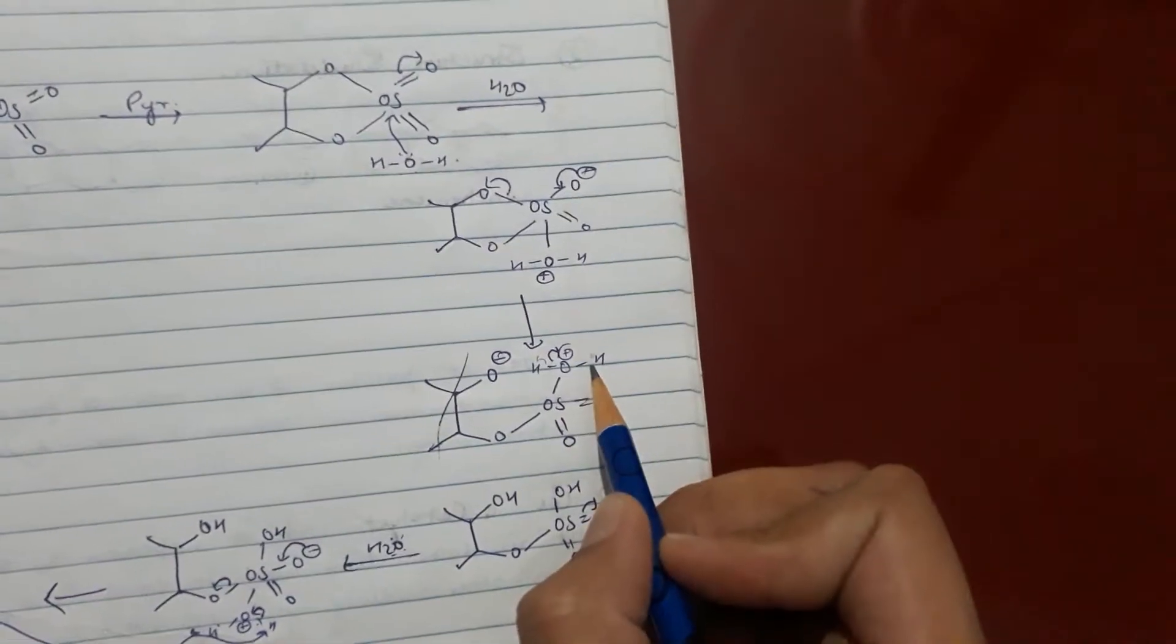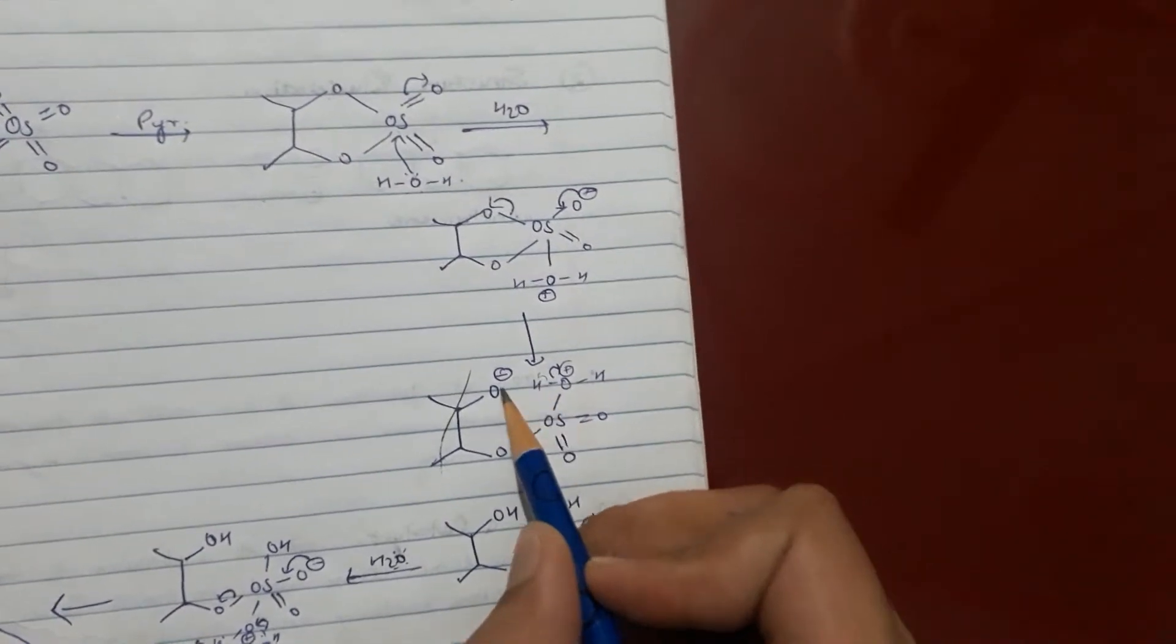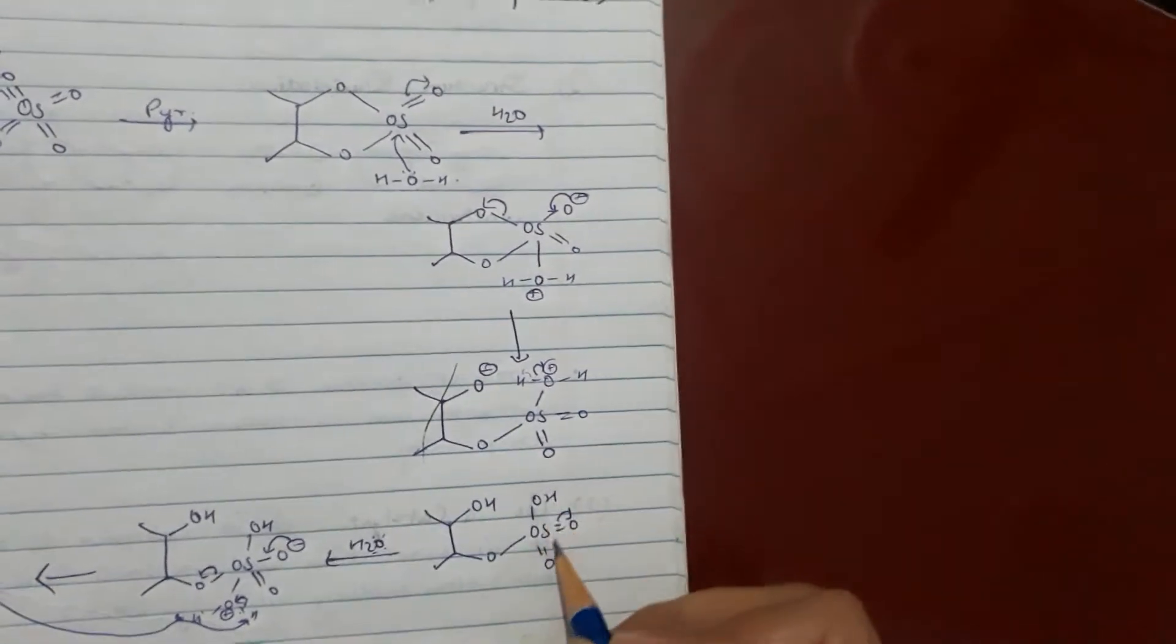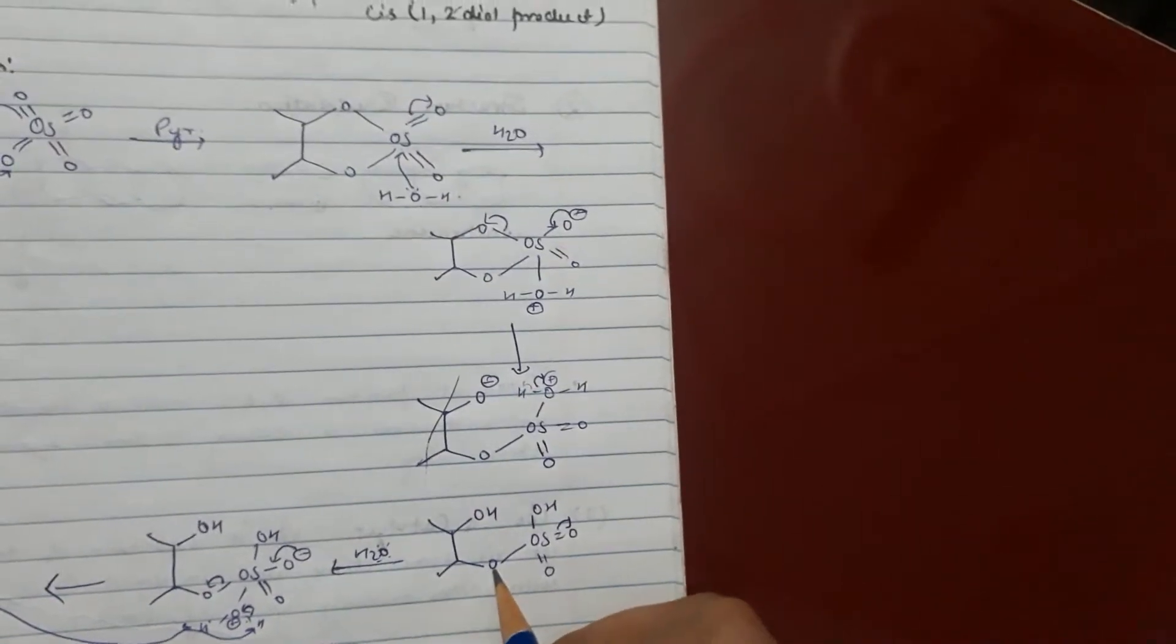So it will make this OH neutral and this H2O will be attached here. It will make OH on that position. Now same process for making OH at that position.